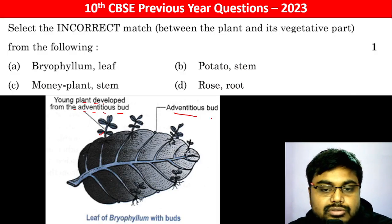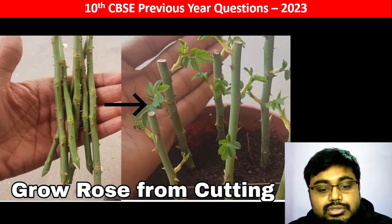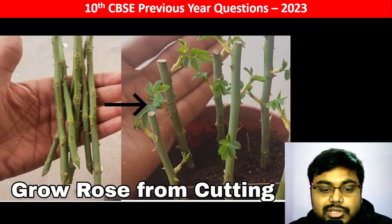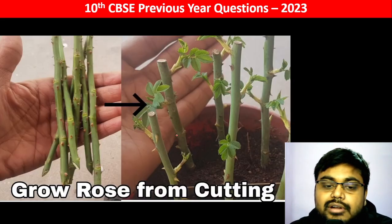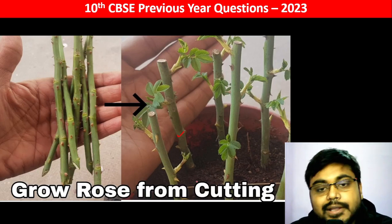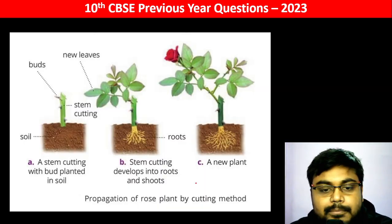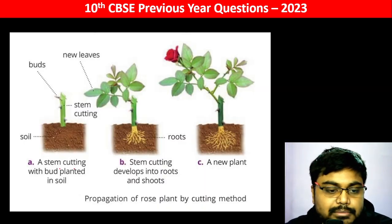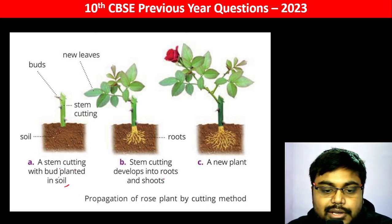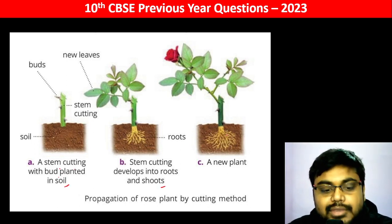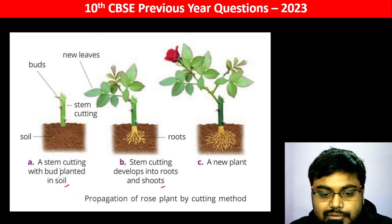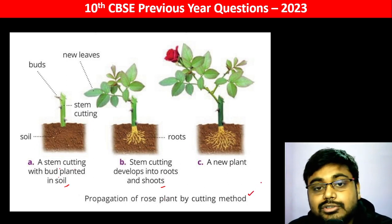Next is rose. Rose also propagates from stem cuttings. Here we can see stem cutting with buds planted in the soil, where stem cutting develops into roots and shoots, and that's how a new plant develops. Propagation of the rose plant is also by the cutting method.